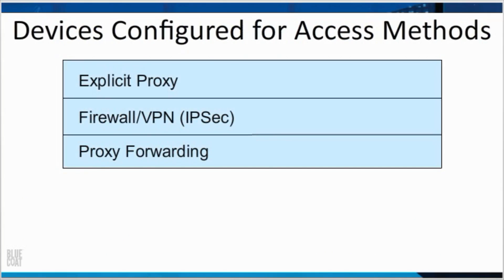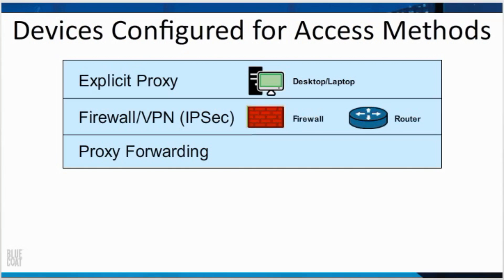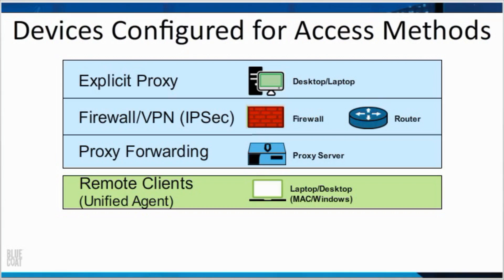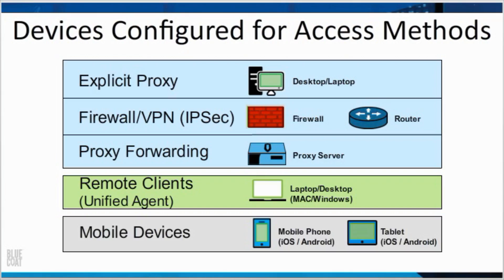Different devices are used by the access methods to send web traffic to the Bluecoat Cloud Web Security Service. Traffic can be sent the following ways: with the explicit proxy access method, directly from a desktop or laptop; with the firewall VPN access method, from a firewall or router; with the proxy forwarding access method, from a proxy server; with the remote clients access method, directly from a remote laptop or desktop; and with the mobile devices access method, directly from a mobile phone.